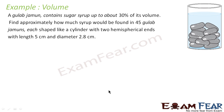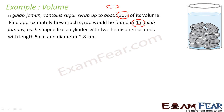Let's take one more example. The question says a gulab jamun contains sugar syrup up to 30% of its volume. Find approximately how much syrup would be found in 45 gulab jamuns, each shaped like a cylinder with two hemispherical ends, of length 5 cm and diameter 2.8 cm. If we call the volume of one gulab jamun V, then the volume of syrup will be 0.3V. To find total syrup, we first need the total volume of 45 gulab jamuns.